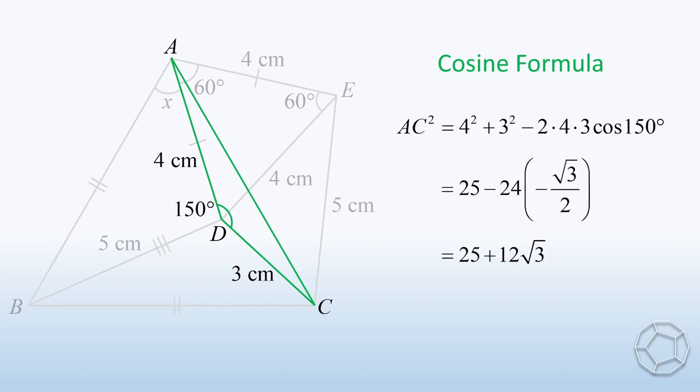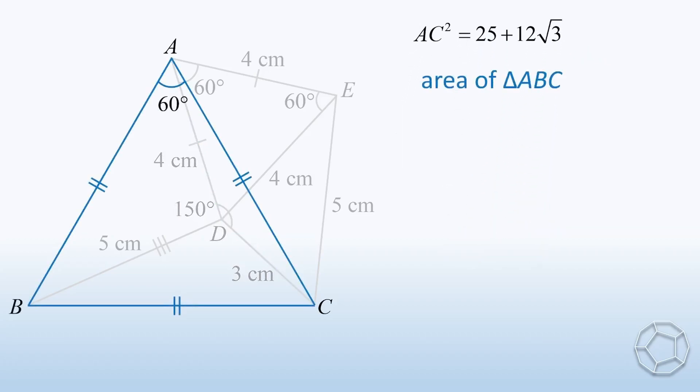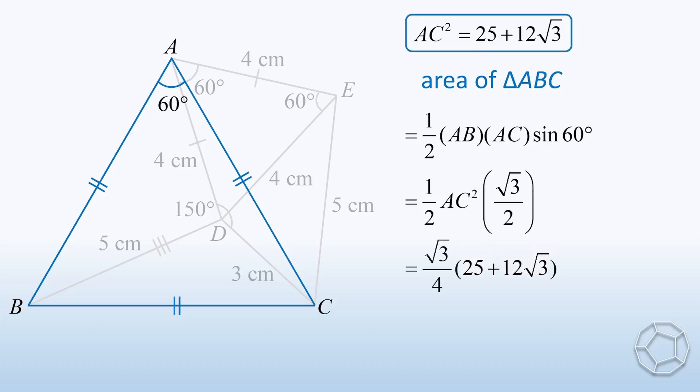Eventually, we can find the area of triangle ABC. It's equal to one-half times AB times AC times sine 60 degrees. Because AB is equal to AC, it becomes one-half AC squared times square root 3 over 2. Putting the value of AC squared above, then the answer is equal to 36 plus 25 times square root 3 over 4 cm squared.